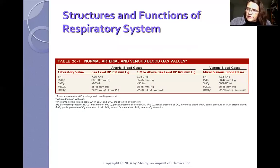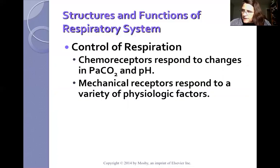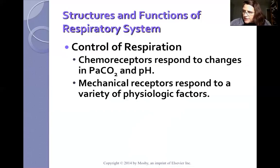There is a chart in your book showing normal ABG values — you should know these as good nursing principle. The control of respiration is caused by two mechanisms: chemoreceptors and mechanical receptors. Chemoreceptors are located in the medulla and respond to changes in hydrogen ion concentration. Peripheral chemoreceptors are located in the carotid bodies at the bifurcation of the common carotid arteries. Mechanical receptors are located in the lungs, upper airways, chest wall, and diaphragm.